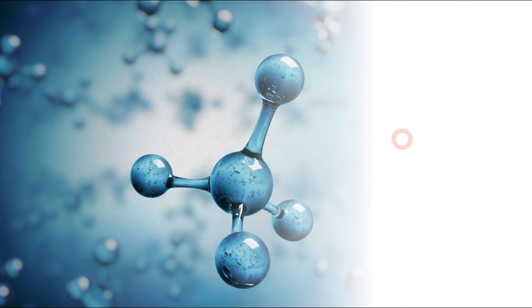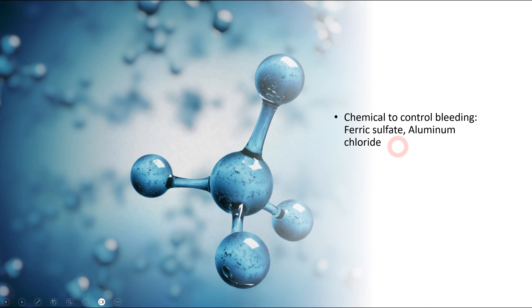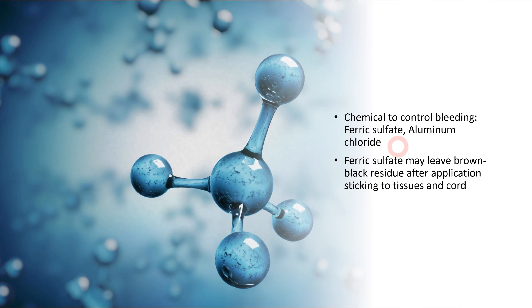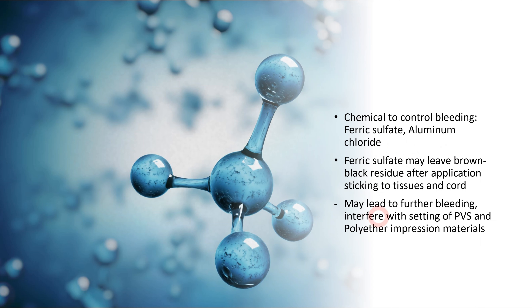There are also different chemicals we can use to control bleeding. The most commonly used are ferric sulfate and aluminum chloride. One important drawback of ferric sulfate is that it leaves a brown-black residue that can adhere to tissues and the gingival retraction cord, potentially leading to further bleeding. Importantly, ferric sulfate can interfere with the setting of PVS and polyether impression materials.